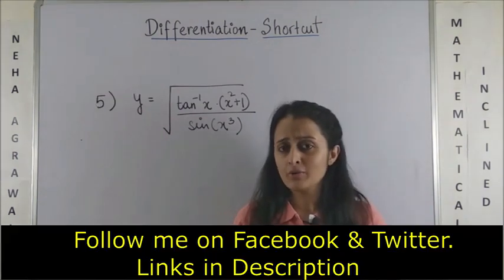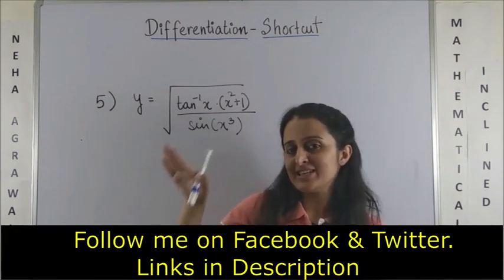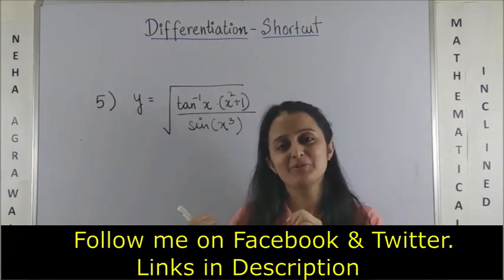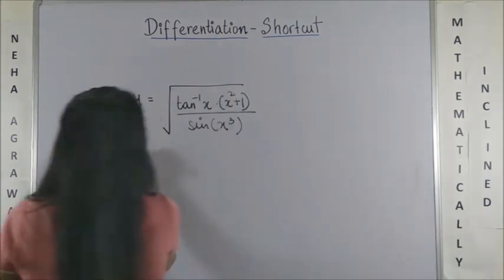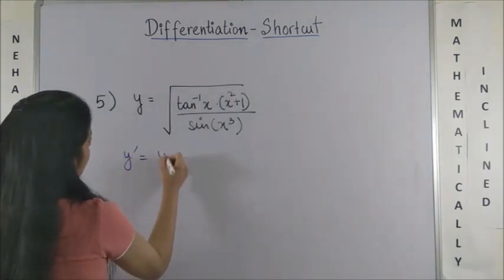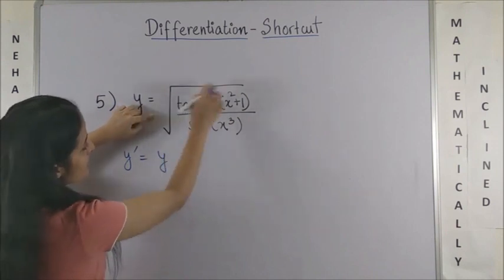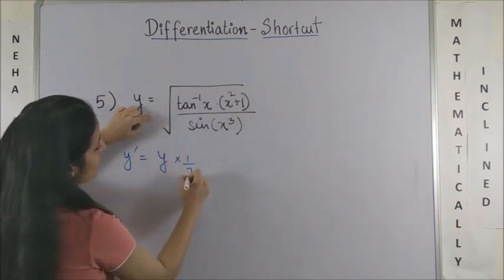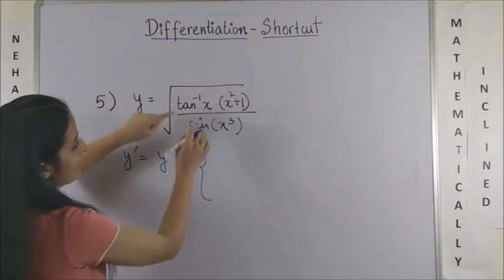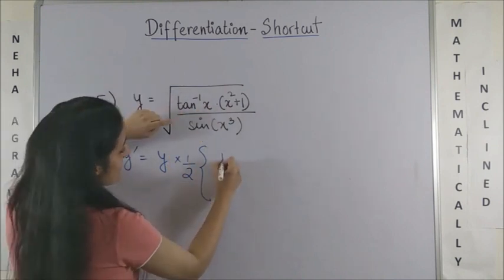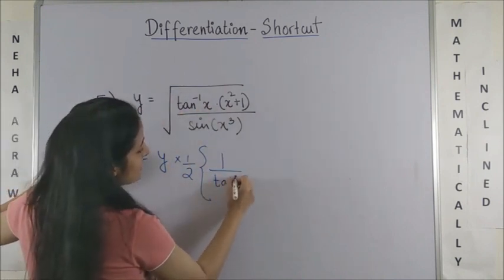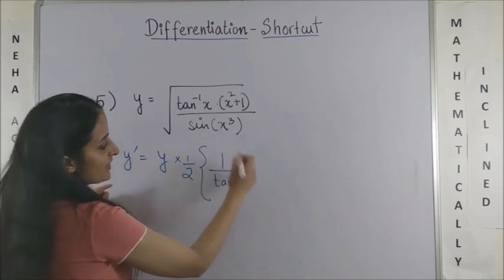And I'm sure by now you know you can apply your seesaw method and get this super fast. So your y' would be y, and since you see the square root sign overall, so I multiply with 1/2 overall.